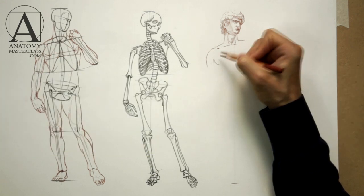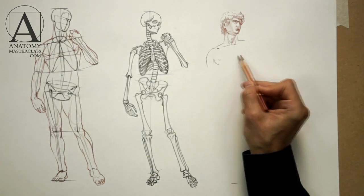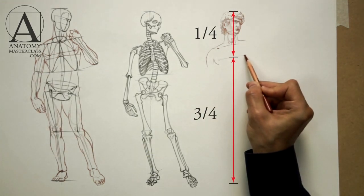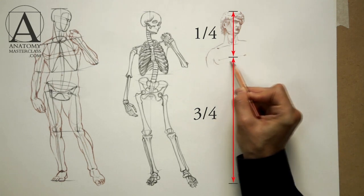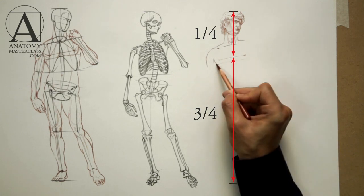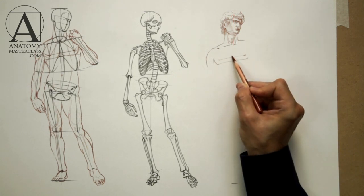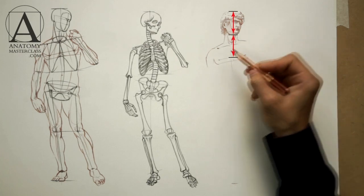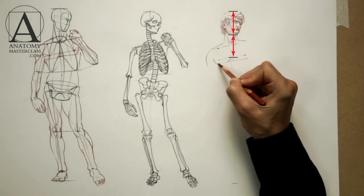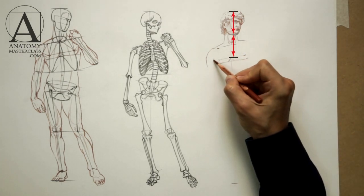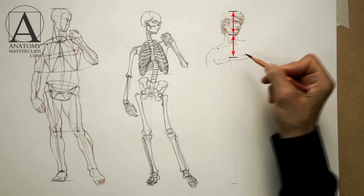A virtual line can be drawn between the nipples on the male chest, one-fourth of the way down from the top of the figure. You can double-check this proportion by comparing the distance between the nipple line and the lower jaw, which should be the same as the height of the head.